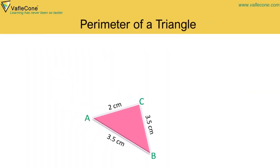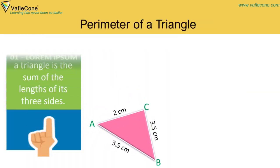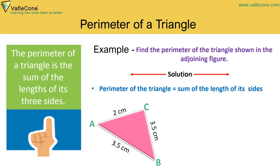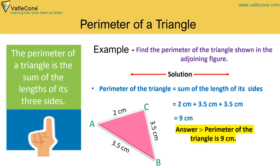Perimeter of a triangle: The perimeter of a triangle is the sum of the lengths of its three sides. Example: Find the perimeter of the triangle shown in the adjoining figure. Solution: Perimeter = sum of lengths of sides = 2 cm plus 3.5 cm plus 3.5 cm = 9 cm. The perimeter of the triangle is 9 cm.